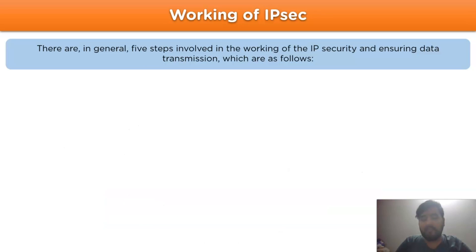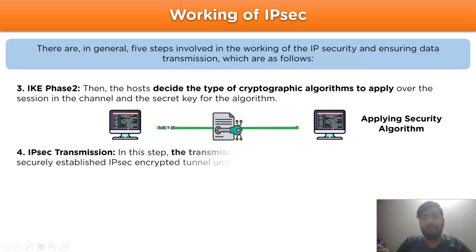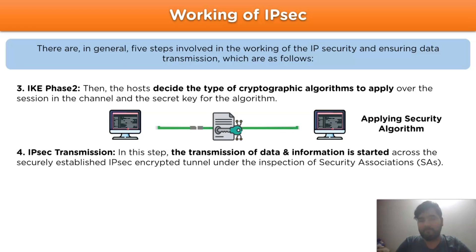The third step is IKE Phase 2. After the second step, the host decides the type of cryptography algorithm to apply over the session in the network channel, and the secret key for the algorithm to be used to encrypt the data for transmission. Then we have IPSec transmission, which involves the actual transfer of data over the network channel using the various protocols used in IPSec security, implemented under the tunnel condition.